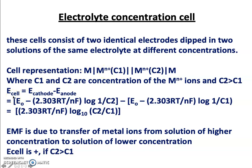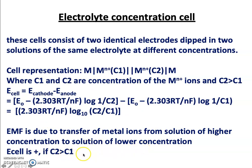The EMF of the electrolyte concentration cell is E_cathode minus E_anode. Applying the Nernst equation for individual electrodes, the equation reduces to: EMF = 2.303 × RT / (nF) × log(C2/C1). The EMF arises due to the transfer of metal ions from the solution of higher concentration to the solution of lower concentration. As long as C2 is greater than C1, the E_cell is positive.